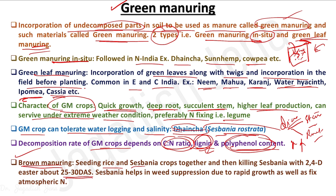Since the green manuring crop is a broad-leaved plant, we can apply 2,4-D ethyl ester for quick knockdown, or bispyribac sodium — both are selective herbicides that will not affect the rice plant. By the time of 25 to 30 days, the green manuring crop fixes some atmospheric nitrogen, then after desiccation the leaf and stem fall in that area. This is called brown manuring because after herbicide application the plant parts turn brown in color.